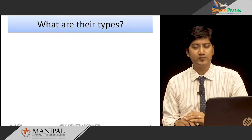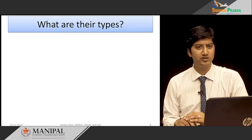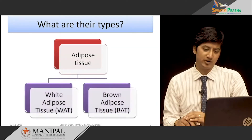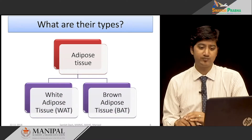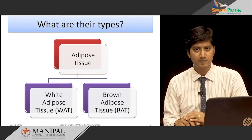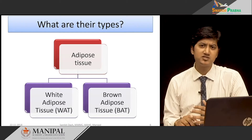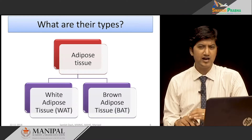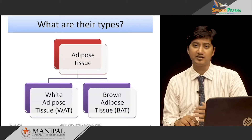There are broadly two types of adipose tissue in mammals: white adipose tissue and brown adipose tissue. White adipose tissue is the most common and serves the functions mentioned above. Brown adipose tissue, which appears brown because of the large number of mitochondria found in them, is mainly found in children and to a very small extent in adults, and functions in generating heat rather than energy.